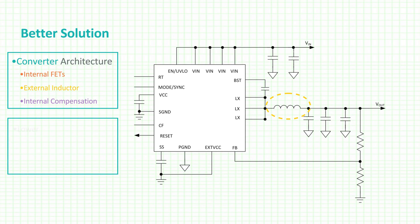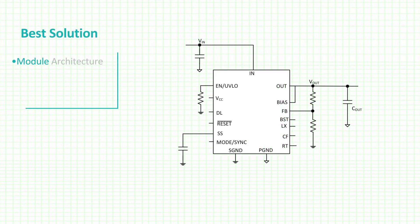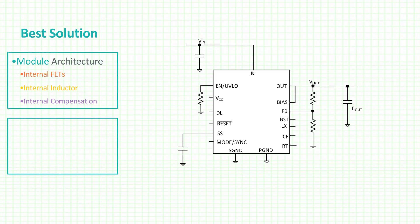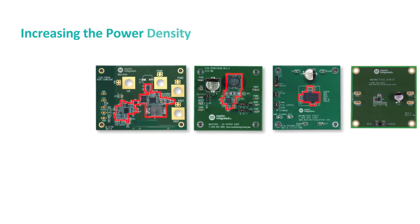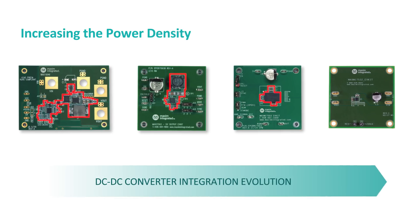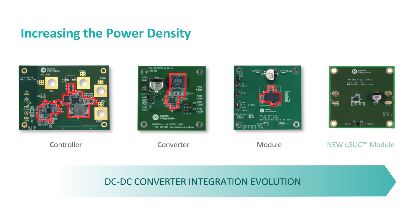The converter architecture's advantages include a smaller component count and improved design time and reliability. The simplest architecture to review is the module, which includes internal FETs, an internal inductor, and internal compensation. Its advantages include minimal components, quick design time, and the highest reliability of all the architectures discussed. The best way to see the impact of the progress made in DC to DC converter architectures is by looking at the space they take up on the board. As you can see from left to right, we've shown from the controller solution all the way to the latest and greatest power module. Each step has taken a bite out of the solution size and created open space for other application needs.